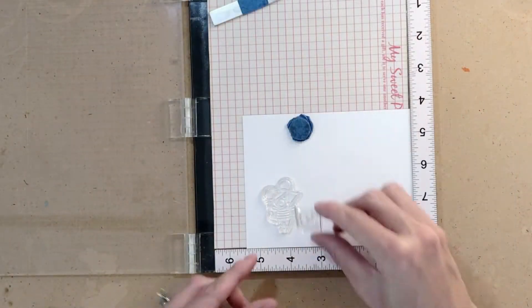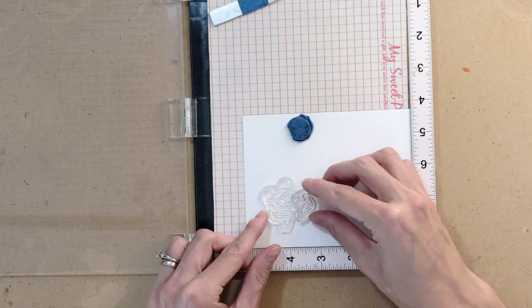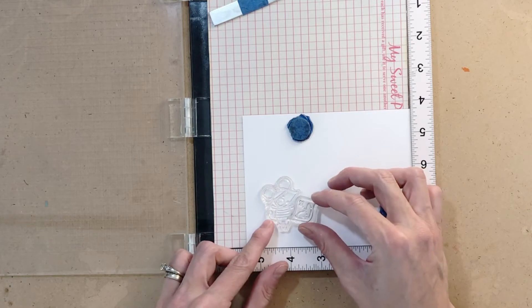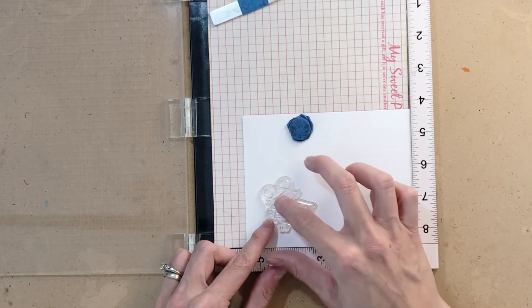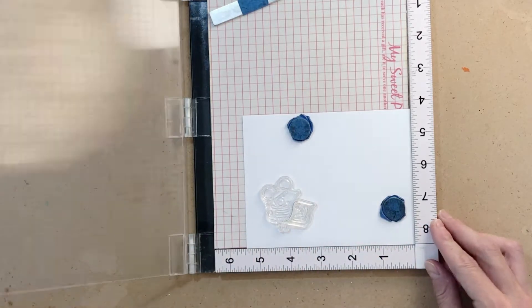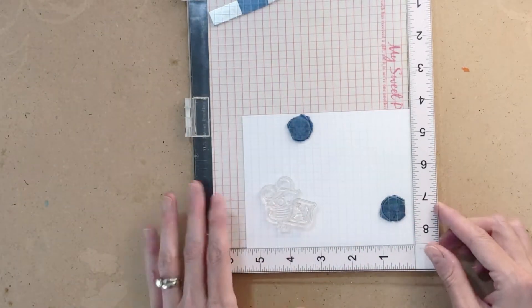So I'm going to start today by stamping a mouse and a map. Now I want the mouse to appear that he's holding that map, so I'm positioning the mouse where I want him and then I place the map where it would be. Then I'm going to fold my MISTI over and the MISTI will pick up the map and the mouse, and I just carefully remove the mouse.